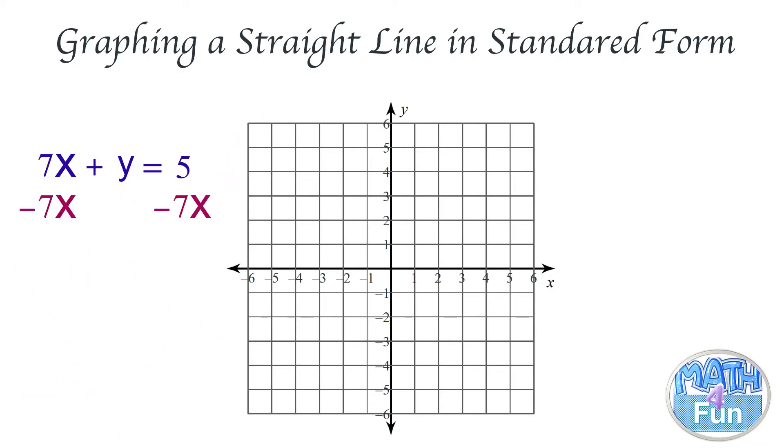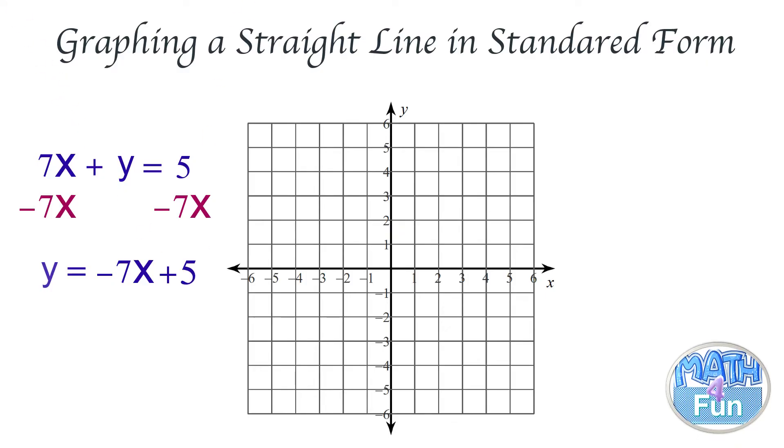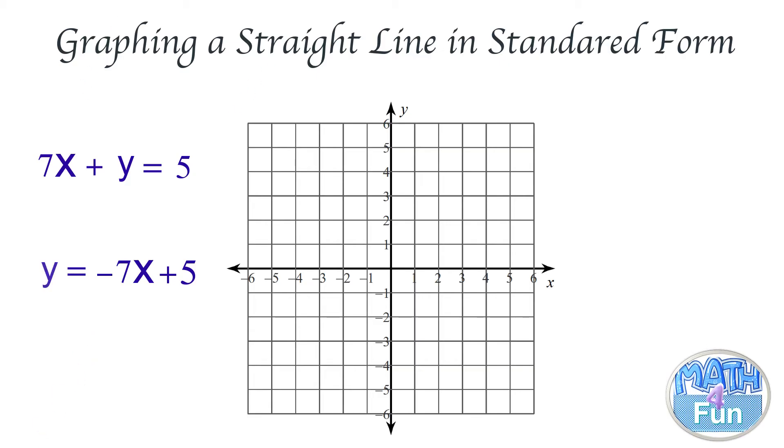We move the 7x to the other side, so it becomes y = -7x + 5. Now we have it in the proper form. Don't forget to put 7 over 1, like -7/1, so that it will help you graph the line.